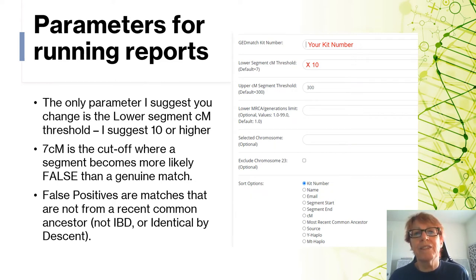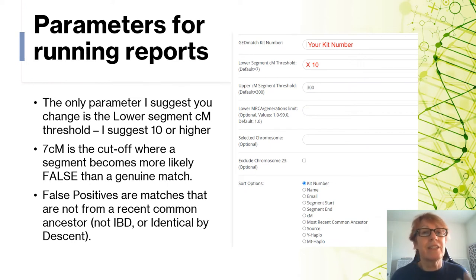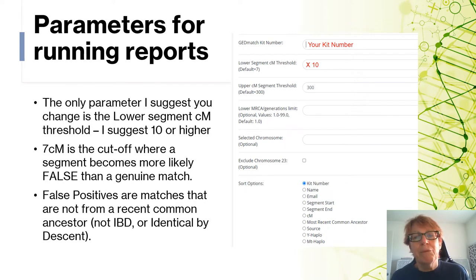Certainly above seven centimorgans there will still be false matches, and you need to work out what they are using shared matches and genealogy. Small matches become much harder to use as evidence of a genetic relationship. It's like comparing your little toenail to someone else's — they might look the same but that doesn't mean you have a common ancestor. We just need to be careful when working with small matches that we don't say these are absolute 100% confirmation of a genetic connection.